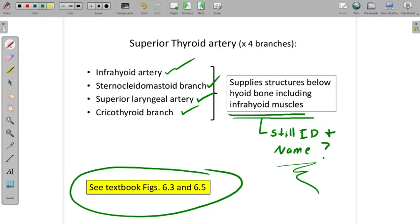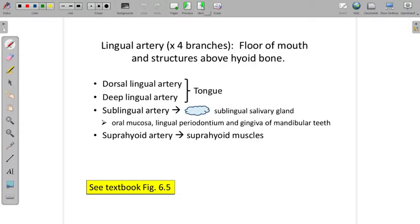Moving up should be the lingual artery. There are four branches of it also. These branches supply the floor of the mouth and many structures above the hyoid bone. The dorsal lingual and the deep lingual artery are supplying the tongue. The sublingual artery gives branches to the tongue as well, but it also supplies the sublingual salivary gland.